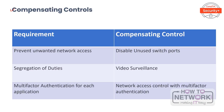Now let's talk about compensating controls. Compensating controls are alternative controls intended to reduce the risk of an existing or potential control weakness. They are not a shortcut to compliance or security — they come into play when a business or technological constraint exists and an effective alternate control is used in the current security threat landscape. For example, if separation of duties is required but duties cannot be separated because of company size, compensating controls should be in place — such as audit trails and transaction logs reviewed by someone in a higher position.